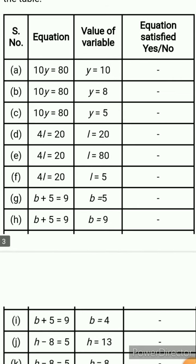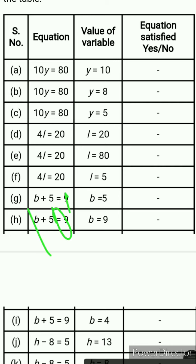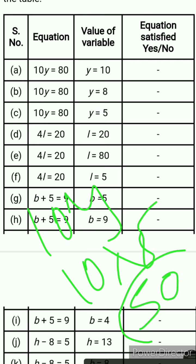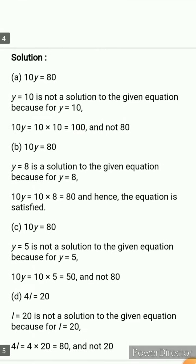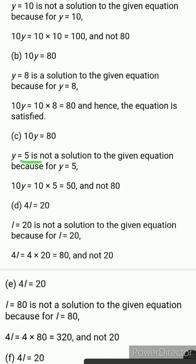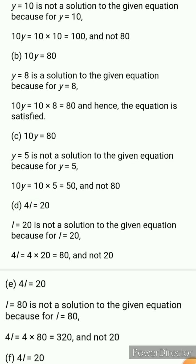Next is 10y equals 80, this time y equals 5. Put 5 in place of y: 10 times 5 is 50. But the right-hand side is 80. So again the equation is not satisfied. Therefore y equals 5 is not a solution of the given equation, because for y equals 5 the answer is 50, not 80.